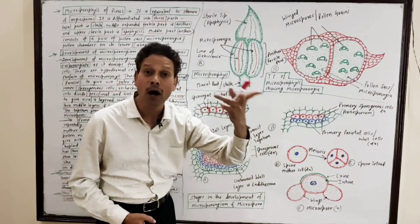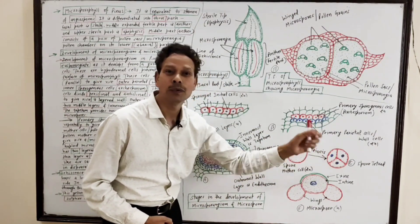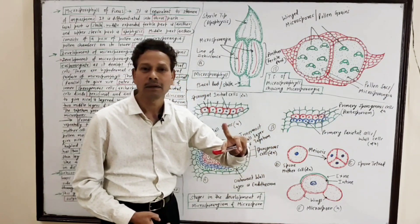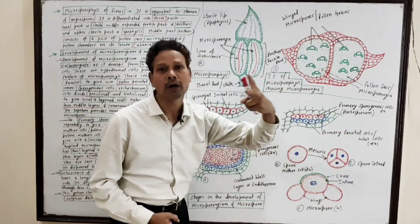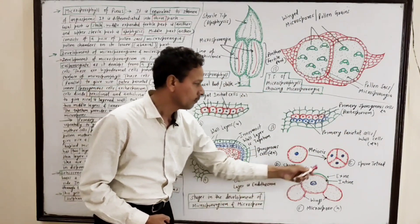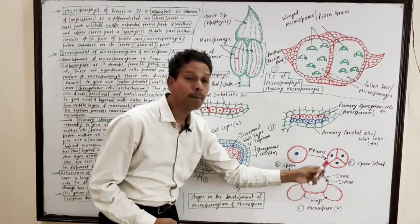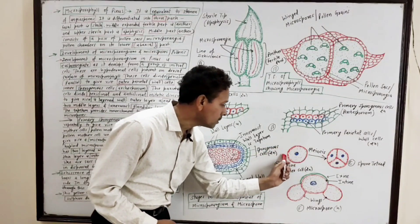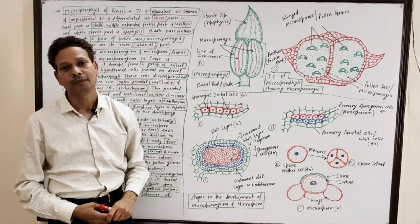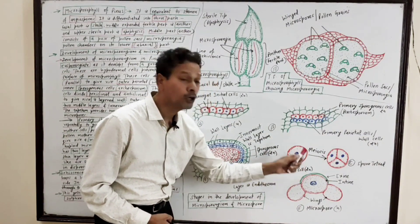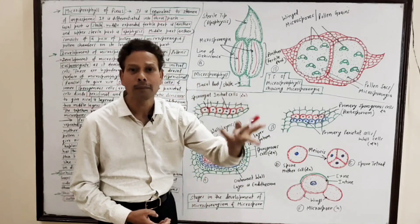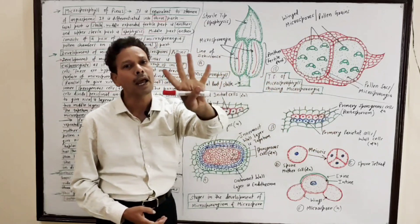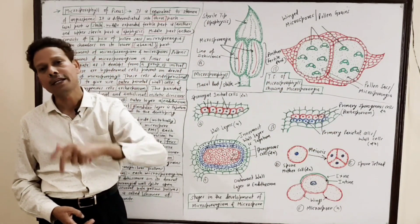Each pollen mother cell is a diploid cell that undergoes meiotic division. As a result, the spore mother cell gives rise to a microspore tetrad. Finally, four haploid microspores or pollen grains are formed from each pollen mother cell.